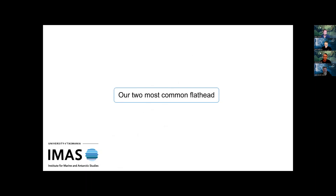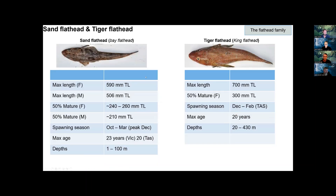There's a lot of confusion between the names, particularly sand flathead and king flathead. Sand flathead — sometimes called bay flathead — are a smaller species. Maximum length for females on record is about 590mm, males 506mm. Females mature around 240–260mm total length, males about 210mm. Spawning season runs October to March, peaking in December. Maximum recorded age is about 23 years in Victoria and 20 in Tasmania. They tend to live in shallower water — up to about 100 metres — in estuaries and inshore.